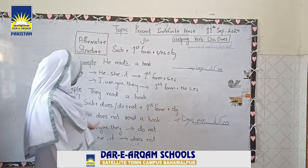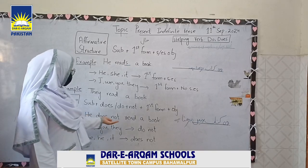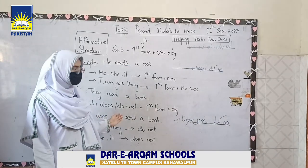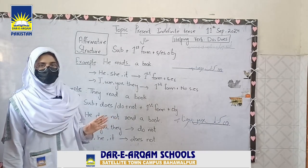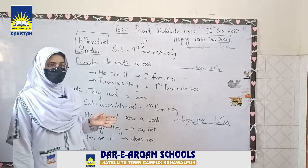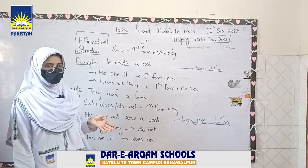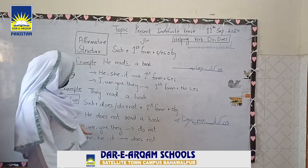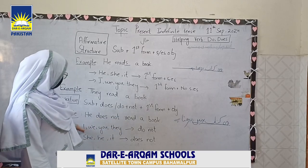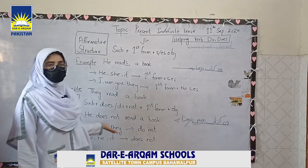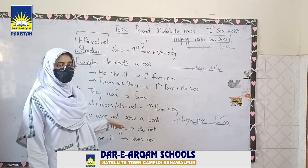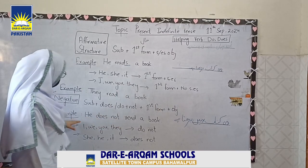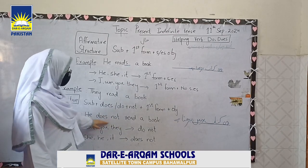In English: he does not read a book. When the subject is he, she, or it, we use does not. For I, we, you, or they, we use do not. For example: I do not read.